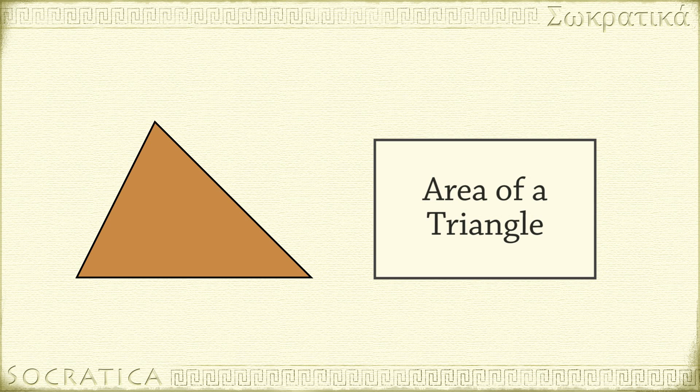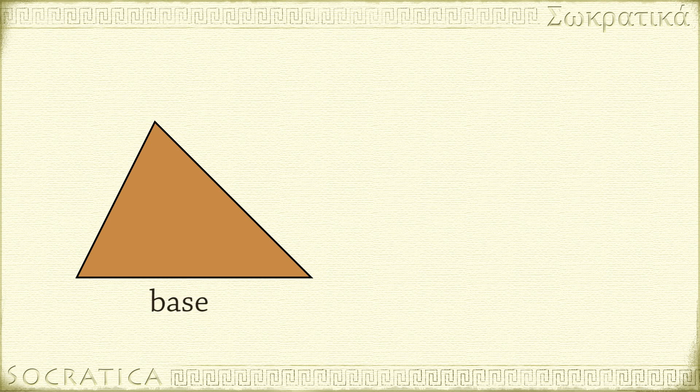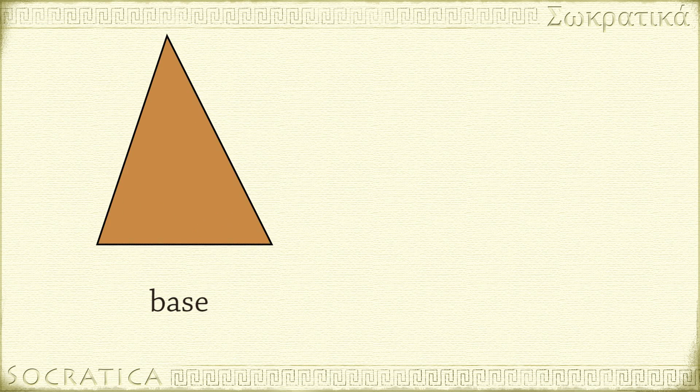To find the area of a triangle, you must first choose a side to be the base. You can use any of the three sides.